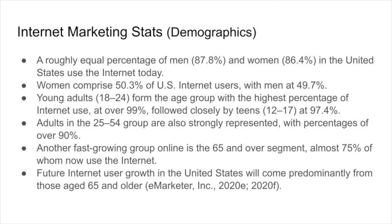A roughly equal percentage of men and women in the United States use the internet today — we assume the information is about the same for Canada. Women comprise about 50% and men about 50% of U.S. internet users. Young adults 18 to 24 form the age group with the highest percentage of internet use at over 99%, followed closely by teens 12 to 17 at about 97%. Adults in the 25 to 54 group are represented at around 90%. Another fast-growing group online is the 65-and-over segment — almost 75% are online, and that's a big population because they're the baby boomers. Future internet user growth in the United States will come prominently from those aged 65 and over.